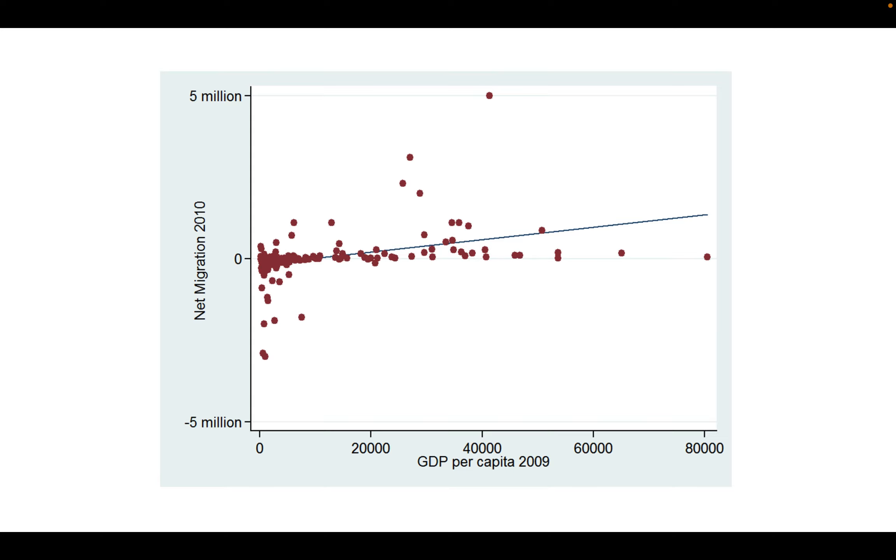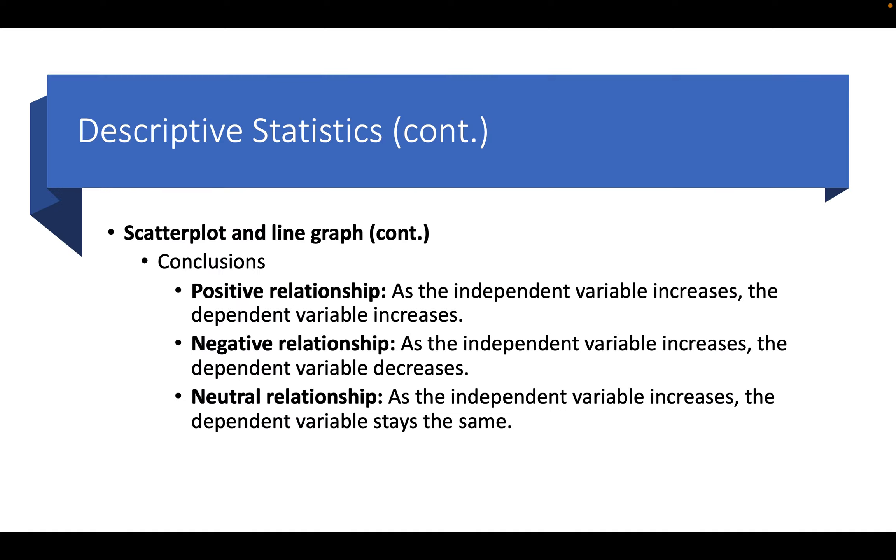Countries that are relatively poor will not attract as many migrants for economic reasons. So that scatter plot can tell us something very useful about that relationship.